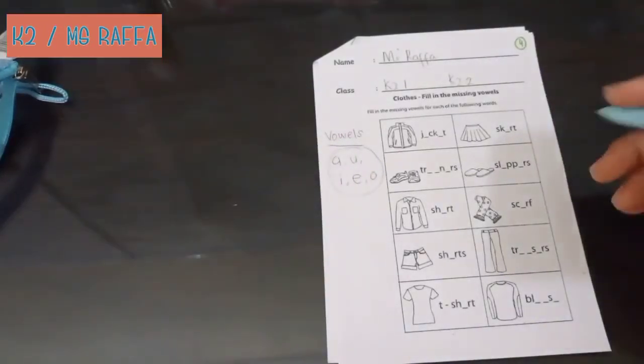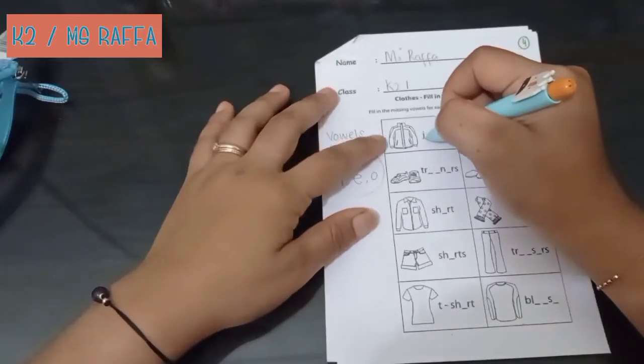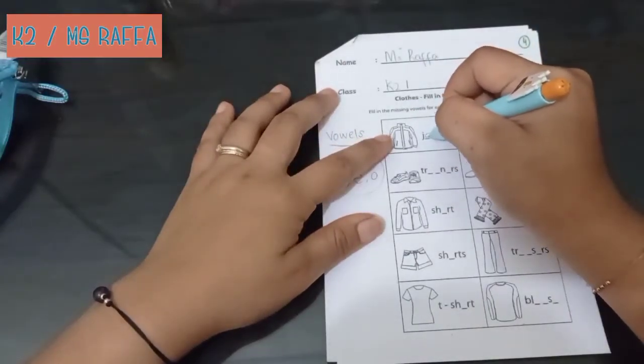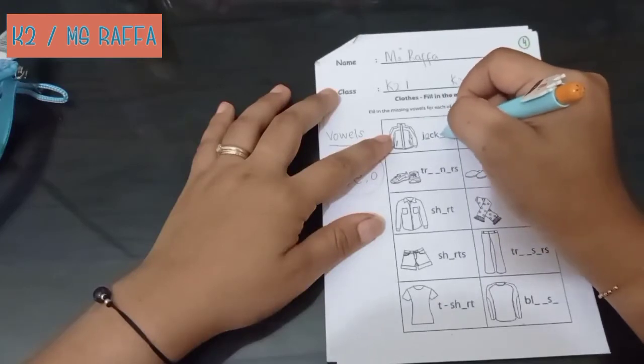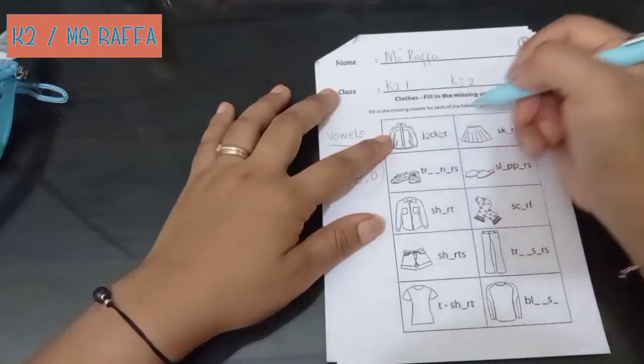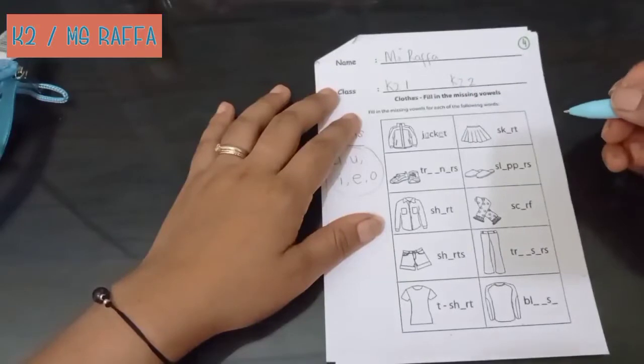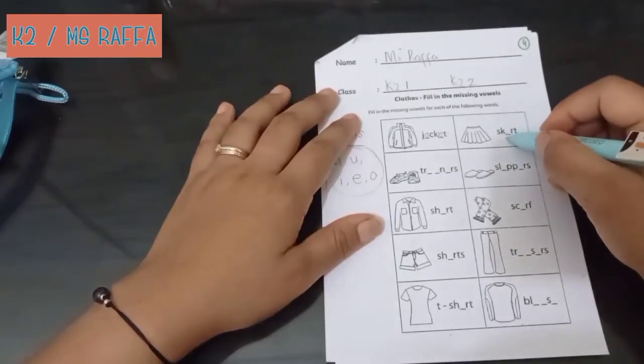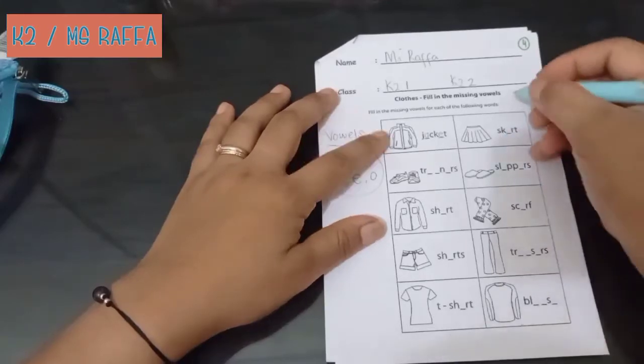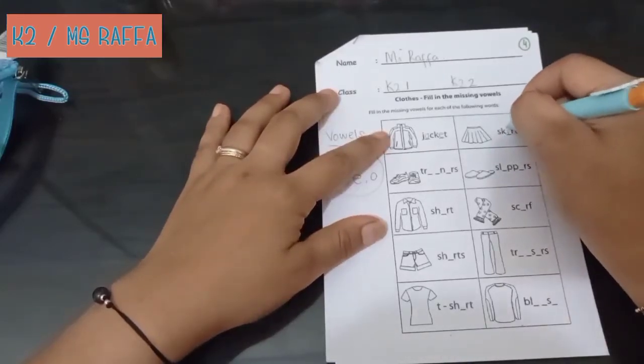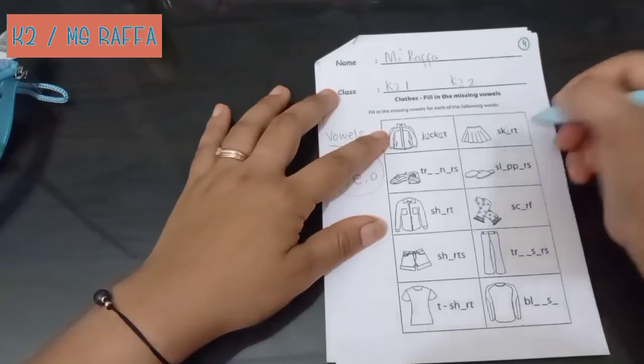Okay. Now the first is jacket. Jacket. J-A-C-K-E-T. Jacket. Skirt, rok. Skirt. S-K-I-R-T. Skirt.